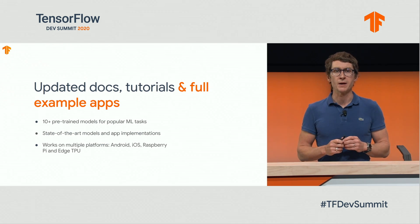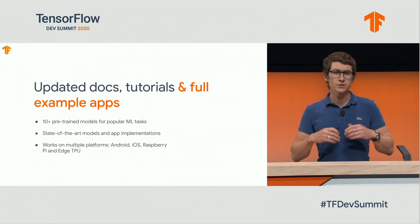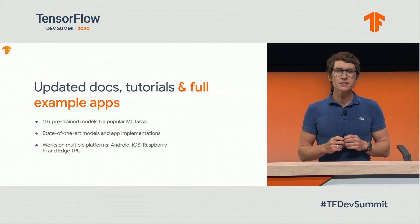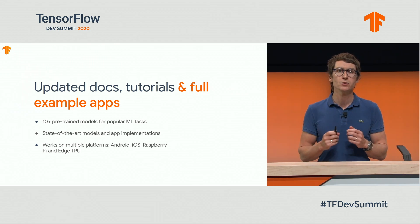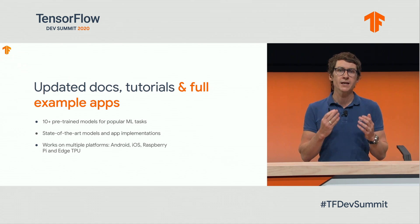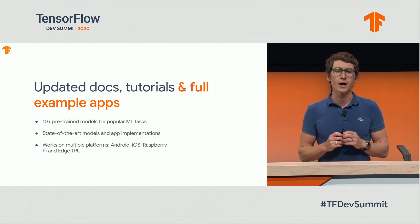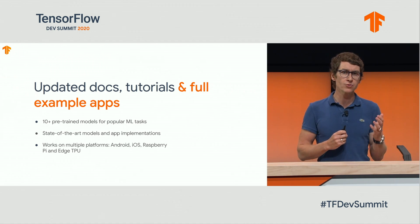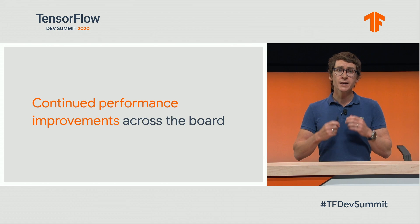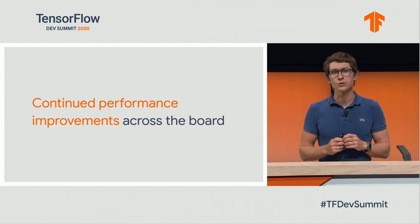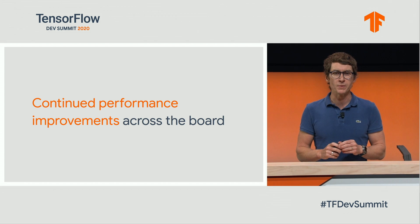We've heard from developers about the need for more and better tutorials and examples. So we're releasing several full example apps which show not only how to use a model, but the full end-to-end code that a developer would need to write to work with TF Lite. They work on multiple platforms: Android, iOS, Raspberry Pi, and even the Edge TPU. Now I'd like to hand over to TJ, who's going to run through some more exciting improvements to TF Lite and dive into the engineering roadmap more.